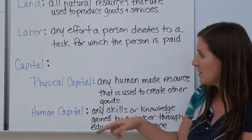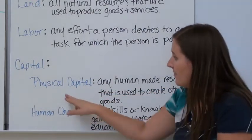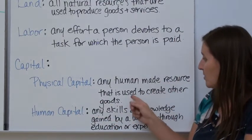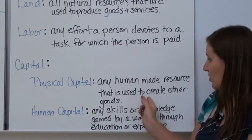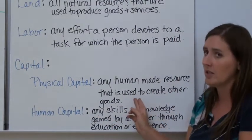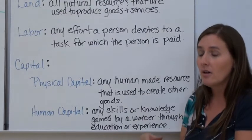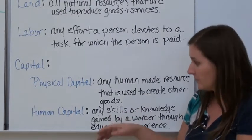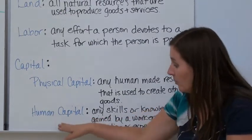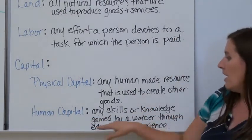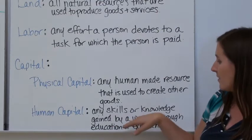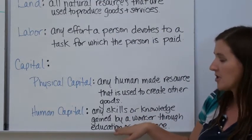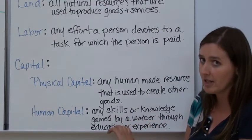Capital is split into two sections. Physical capital is any human-made resource used to create other goods, like a tractor, a building, or a computer. Human capital refers to the skills or knowledge gained by a worker through education and experience.